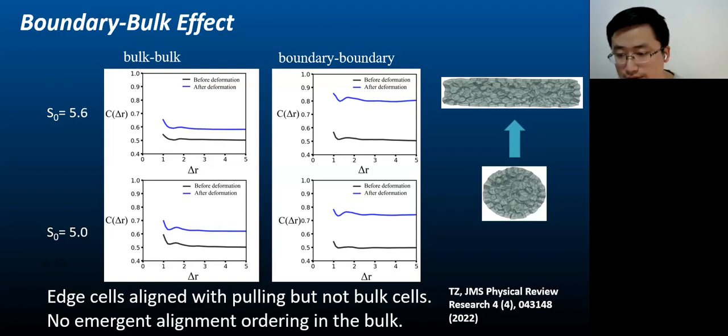However, for the boundary cells, they do exhibit ordering with a much higher correlation in alignment as compared to the bulk cells. So there is one cell skin depth phenomenon in which the boundary cells align with the deformation, but the bulk cells do not.